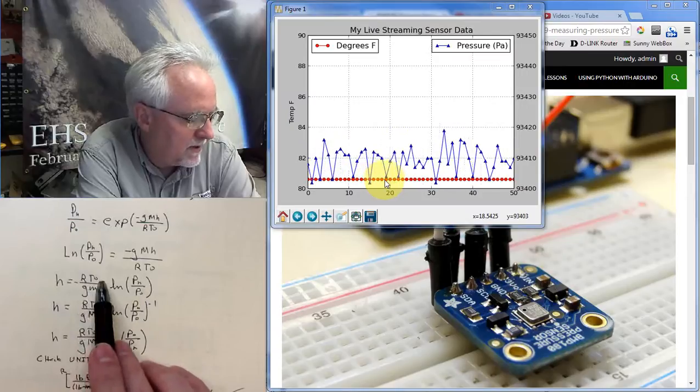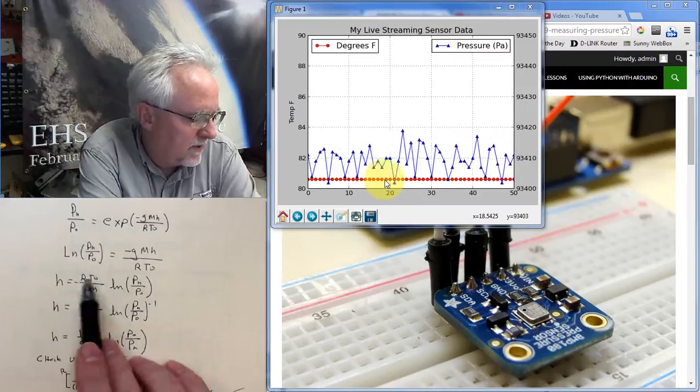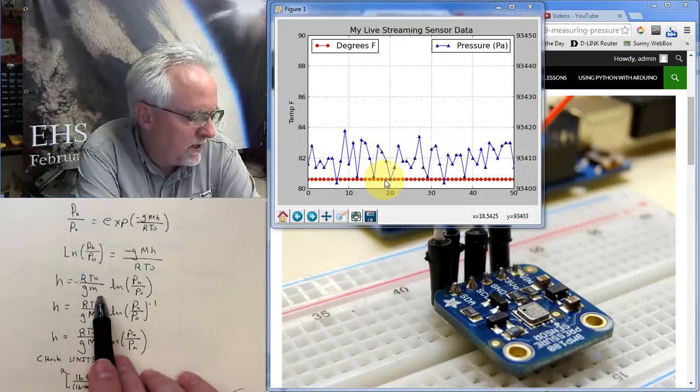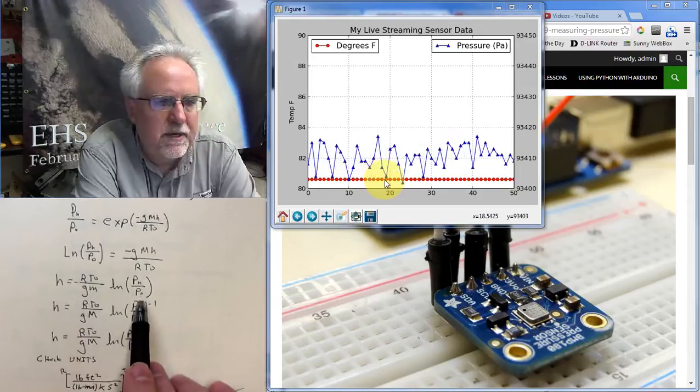So I have H is equal to multiplying by RT. I have R times T over G times M, so I'm inverting that to get it over here. So H is minus RT over gm times the ln of pH over p0. I am getting H by itself.